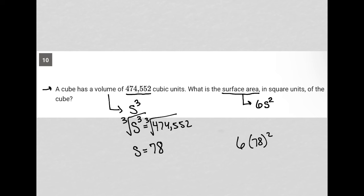So I'm going to square my 78. So 78 squared. And I'm going to multiply that by 6.